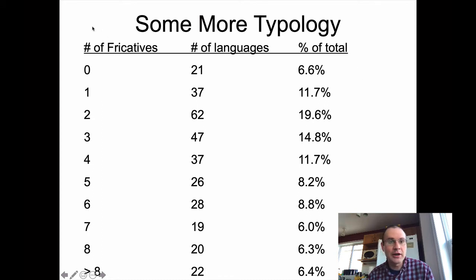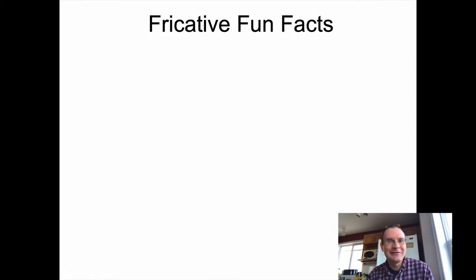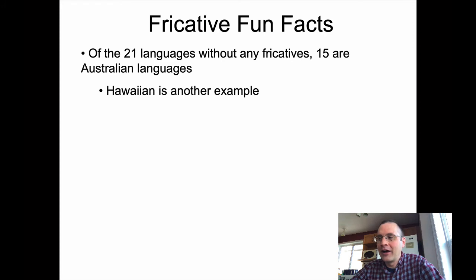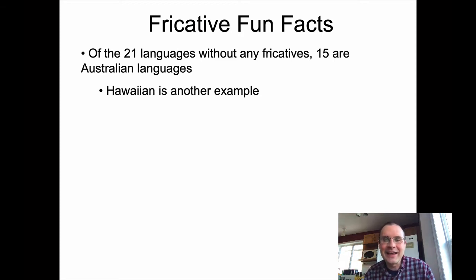So we have a lot of fricatives to worry about in English. A lot of second language learners don't really like the English interdental fricatives — they're apparently not fun to pick up if you didn't get them for free. Of the 21 languages without any fricatives, 15 are Australian. Australian languages have a lot of stop places of articulation, but for some reason have a lot of stops and not so many fricatives.